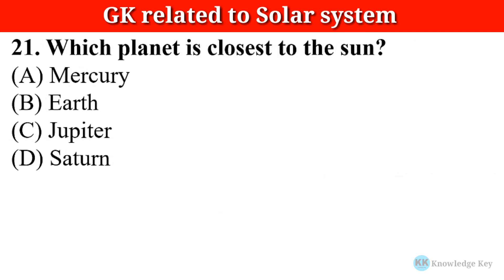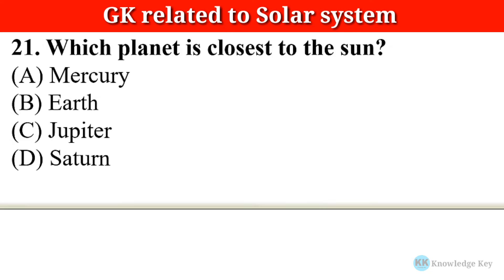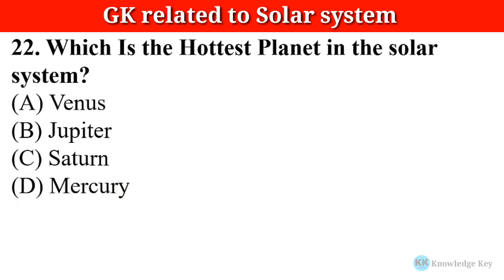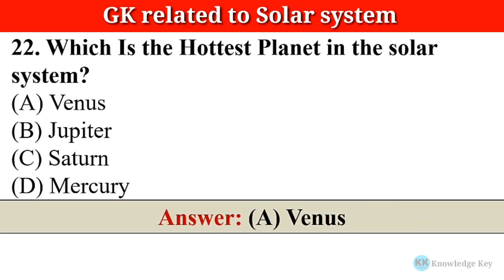Question number twenty-one: Which planet is closest to the Sun? The correct answer is option A — Mercury. Question number twenty-two: Which is the hottest planet in the solar system? The correct answer is option A — Venus.